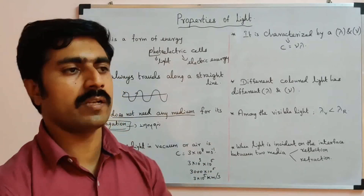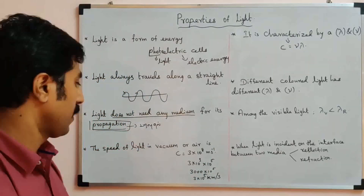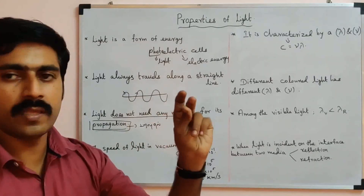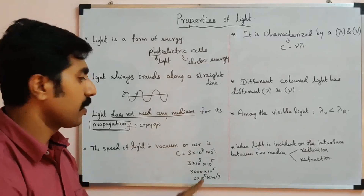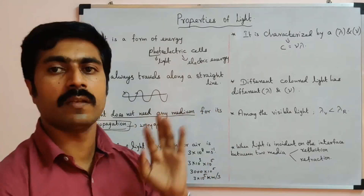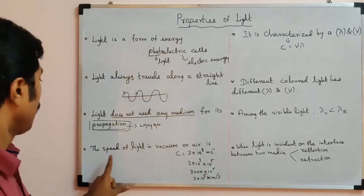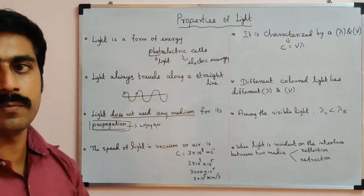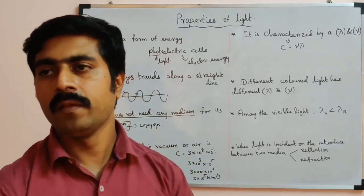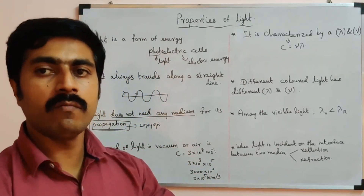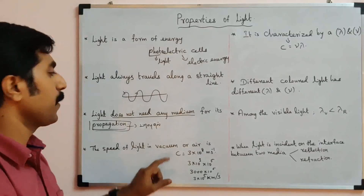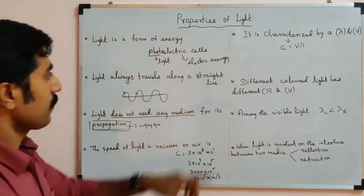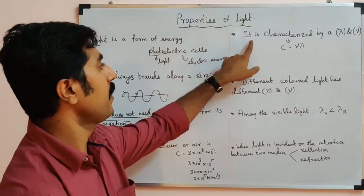Light is transverse in nature. It travels at a speed of 3 lakh kilometers per second. The fourth property: light is characterized by wavelength (lambda) and frequency (nu).